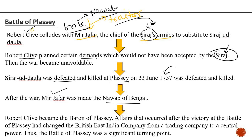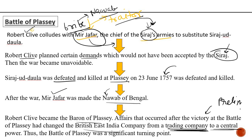After the war, Mir Jafar was made the Nawab of Bengal as promised. Robert Clive became the Baron of Plassey. Affairs that occurred after the victory at the Battle of Plassey changed the British East India Company from a trading company to a central power — this is very important for prelims. During which year did the British East India Company convert from a trading company to a central power? It was after the Battle of Plassey only. So the Battle of Plassey was a very important turning point in the functions, rules, and powers of the British East India Company.